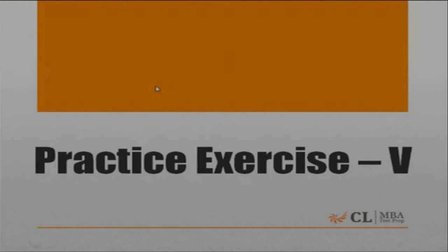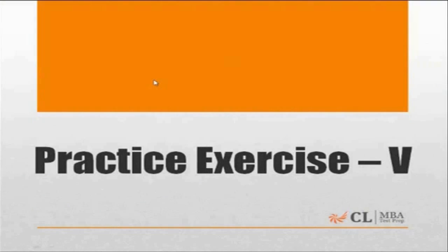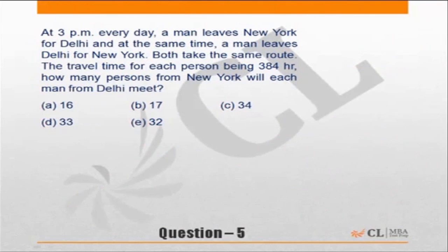That is exercise 5: time, speed, distance. Let's go through the question. Question 5: at 3 p.m. every day, a man leaves New York for Delhi, and at the same time a man from Delhi leaves for New York. They take the same route. The travel time for each person is 384 hours. How many persons from New York will each man from Delhi meet?